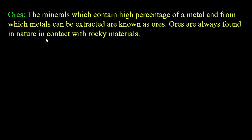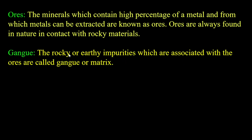Ores are always found in nature in contact with rocky materials. The rocky or unwanted impurities which are associated with the ores are called gangue or matrix.